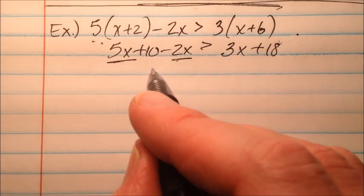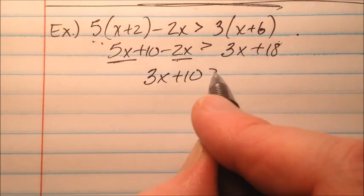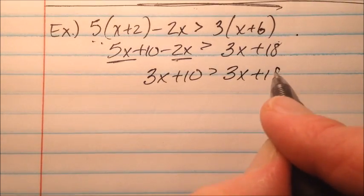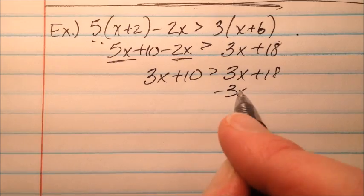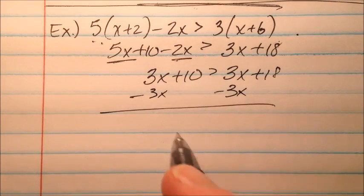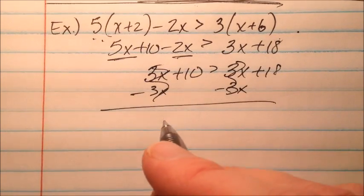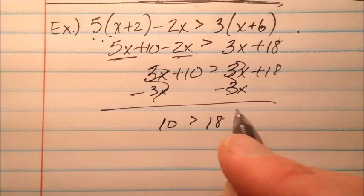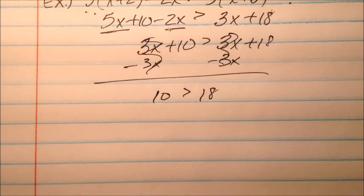So the like terms I have are 3x plus 10 greater than 3x plus 18. Well, I notice these 3x are the same. So when I subtract 3x from both sides, they'll go away. And I'm left with 10 is greater than 18.